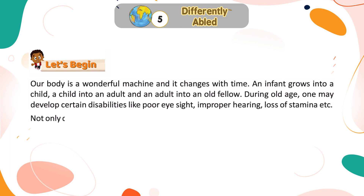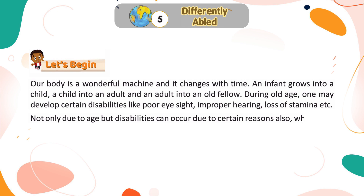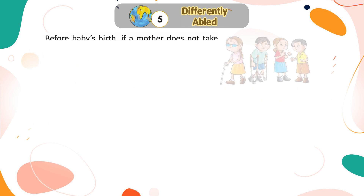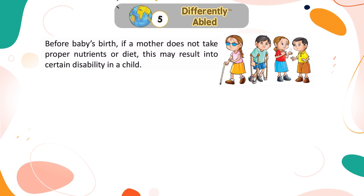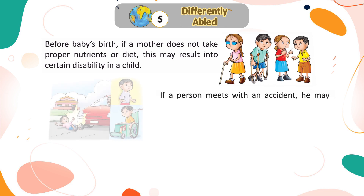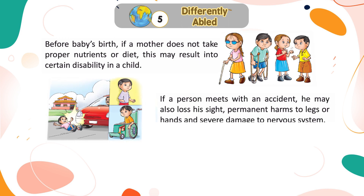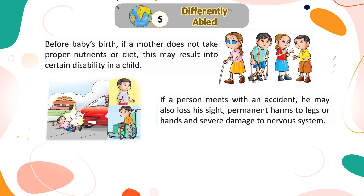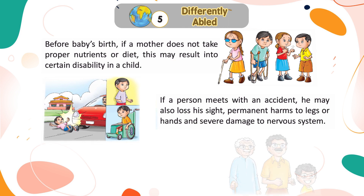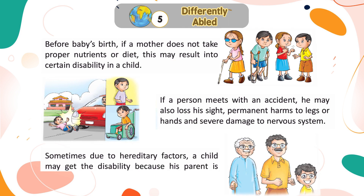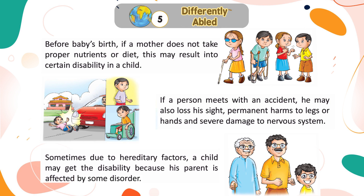Not only due to age, but disabilities can occur due to other reasons also. Before a baby's birth, if a mother does not take proper nutrients or diet, this may result in certain disability in a child. If a person meets with an accident, he may also lose his sight, suffer permanent harm to legs or hands, or severe damage to the nervous system. Sometimes, due to hereditary factors, a child may get a disability because a parent is affected by some disorder.